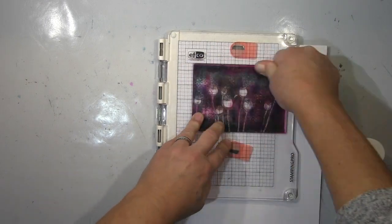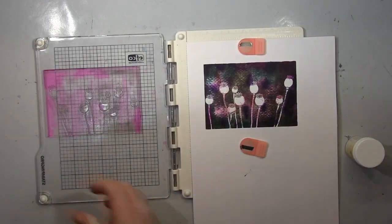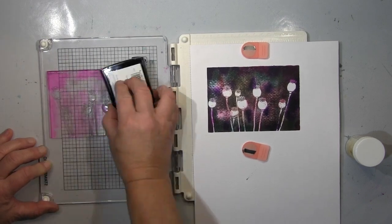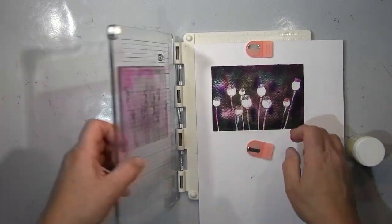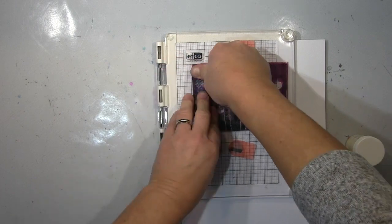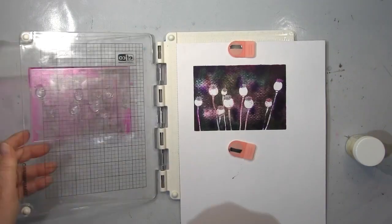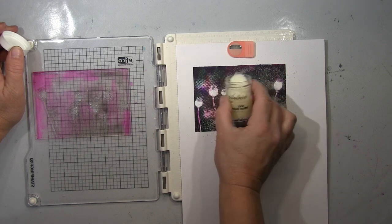So, jetzt habe ich Versamark genommen und bin drüber und noch ein bisschen. Ich will das richtig schön dick fett drauf haben auf dem Papier, um dann mit ganz groben, klaren Embossingpulver zu arbeiten, dass ich jetzt da drüber packe.